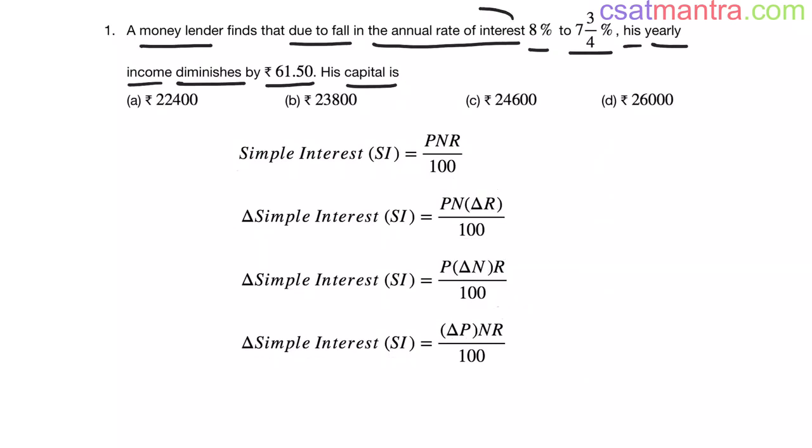In this problem, rate of interest is changing my friends. So we will be using this formula. So delta R is 8 minus 7 and 3/4. This is 1/4 percentage my friends.